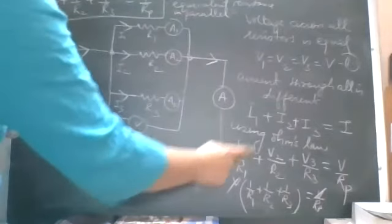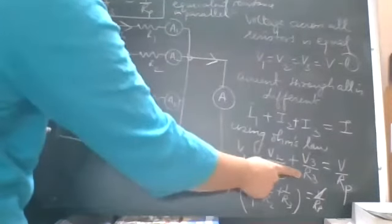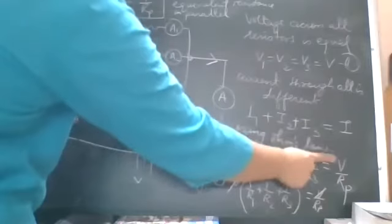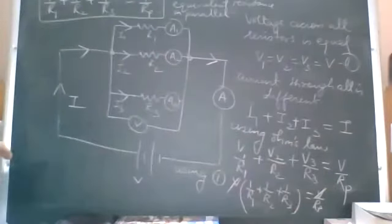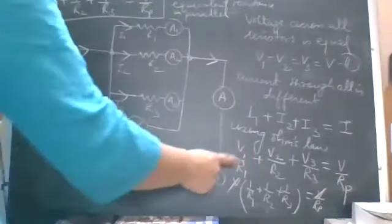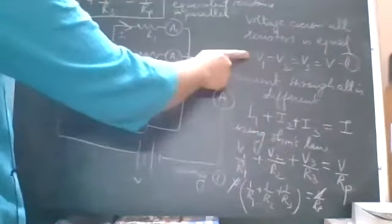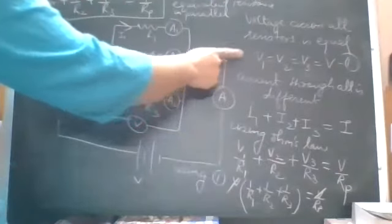So V1 by R1 plus V2 by R2 plus V3 by R3 is V by Rp. Total current is total voltage upon total resistance. In this case, we have given the Rp symbol because it is parallel. And V1, V2, V3, we have observed that they are same as battery voltage.